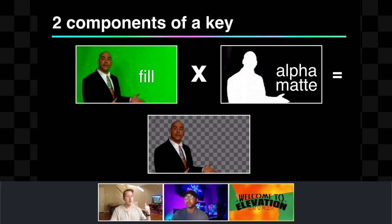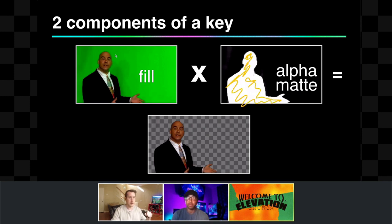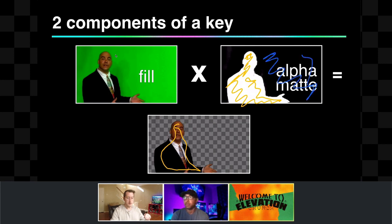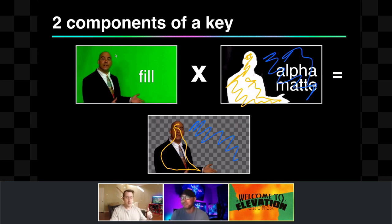Think of it as: your fill times your alpha mat becomes your final image. I'm using a checkerboard pattern to represent transparency — your background would show through that area. Everywhere in your alpha mat that is white will become fully opaque and totally visible. Everywhere in your alpha mat that is black, the switcher makes fully transparent. Anything gray becomes half-opaque. That's how the switcher composites these elements.